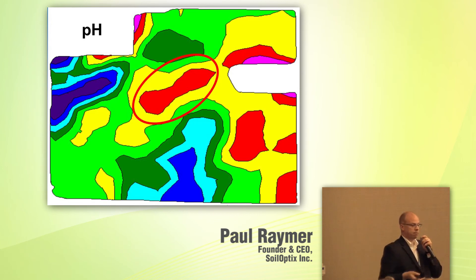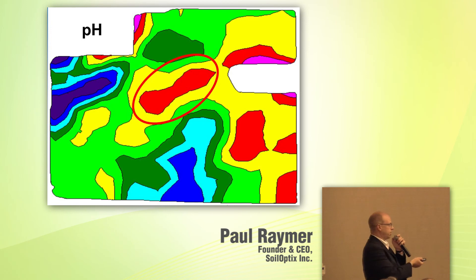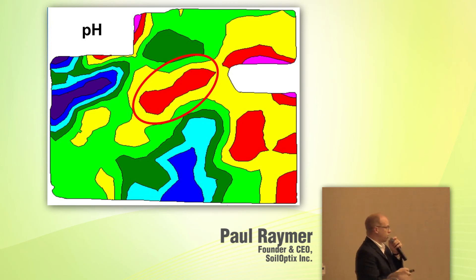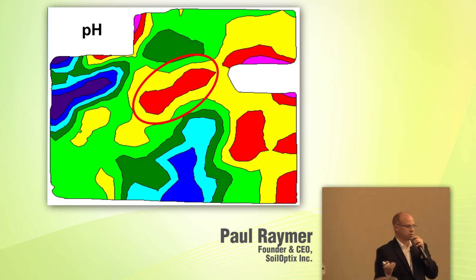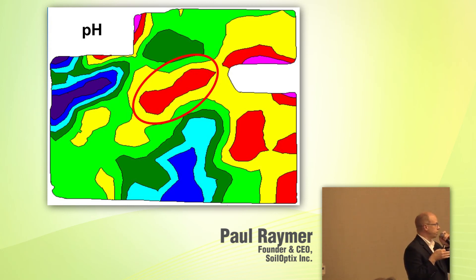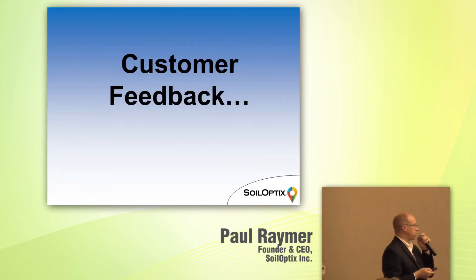Here's a phosphorus map. The green areas are the higher levels of phosphorus. The old barnyard was right here, and you can see where the manure was spread radiating from the field. These were the samples collected to help generate that model — we take the sensor data and the soil lab data and blend them together to generate a high-resolution model like that.